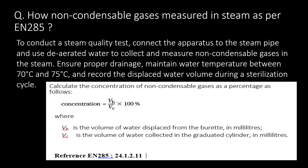How are non-condensable gases measured in steam as per EN 285? This is the summarized procedure from EN 285. To conduct a steam quality test, connect the apparatus to the steam pipe and use deaerated water to collect and measure non-condensable gases in the steam. Ensure proper drainage, maintain water temperature between 70°C and 75°C, and record the displaced water volume during a sterilization cycle. You can refer to the below formula for calculation of non-condensable gases as a percentage in the steam.